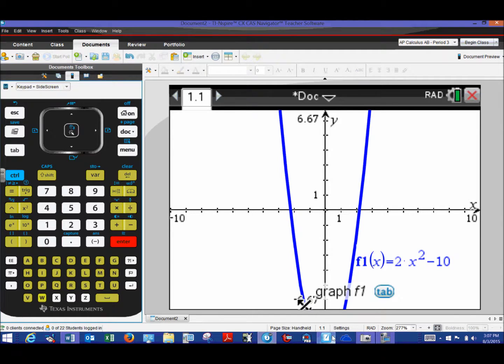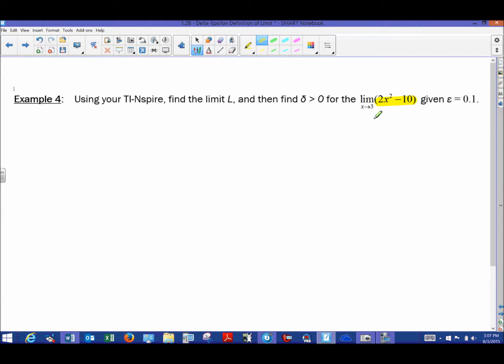But what we're going to focus on is the fact that we want to take the limit of this function as x approaches 3. Now that's not anything that's remarkably difficult. In fact we all know that the answer to that limit can be found as easily as letting x be 3 and that would yield the result for L of 2 times 9, 18 minus 10, which is 8.